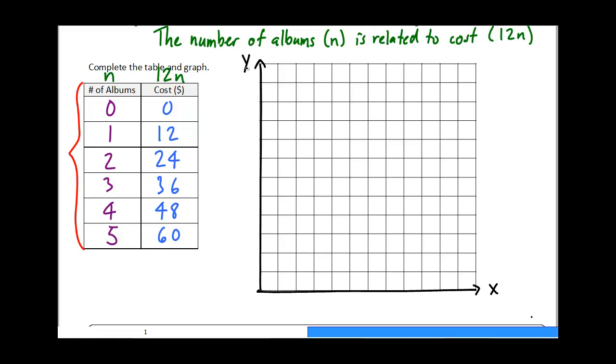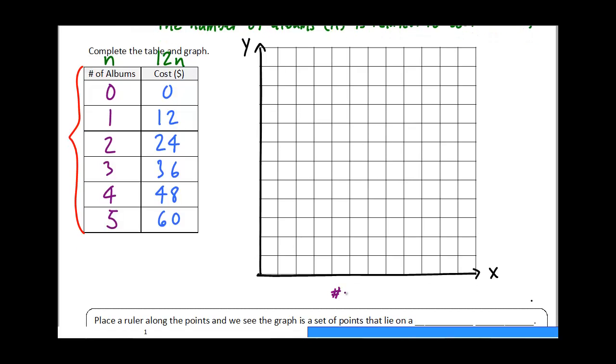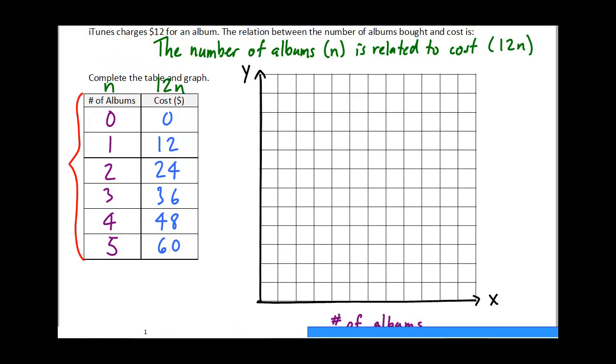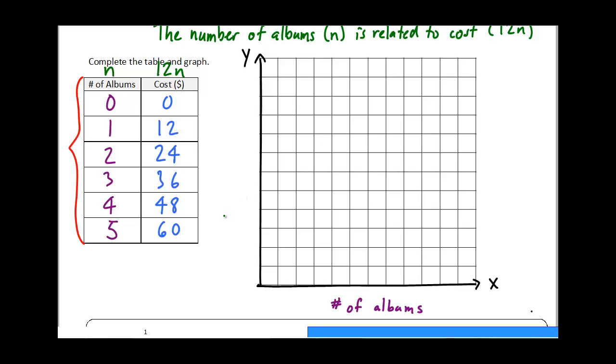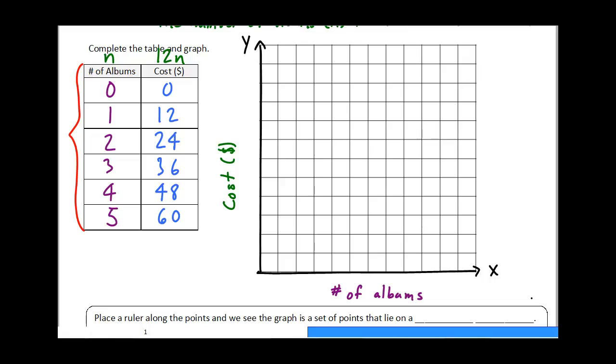Okay, so what we're going to do is put the number of albums across the bottom here, so I'm just going to label that 'number of albums.' And on the y-axis we are going to put the cost, and that's in dollars. If you have a unit like dollars, make sure you include that in your label. Along the x-axis here, number of albums doesn't really have a unit like dollars or centimeters, so I don't have to include it.